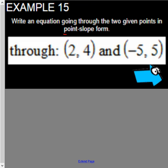Okay, so we need to write this in point-slope form. The only difference is we now need to find our slope. So this is x1, y1, x2, y2.